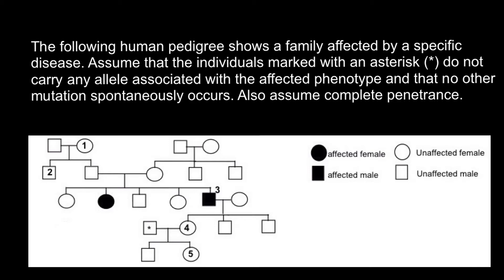Hello and welcome to Nikolai's genetics lessons. The problem of the day is the following: a human pedigree shows a family affected by a specific disease. Assume that the individuals marked with an asterisk do not carry any allele associated with the affected phenotype, that no other mutation spontaneously occurs, and that there is complete penetrance. Here is the list of questions.